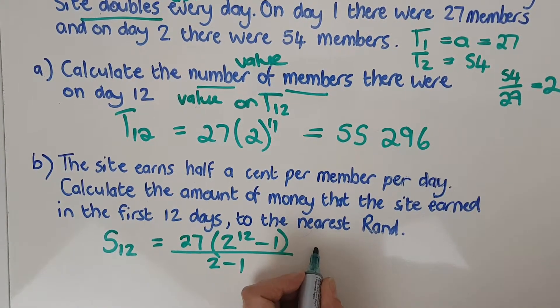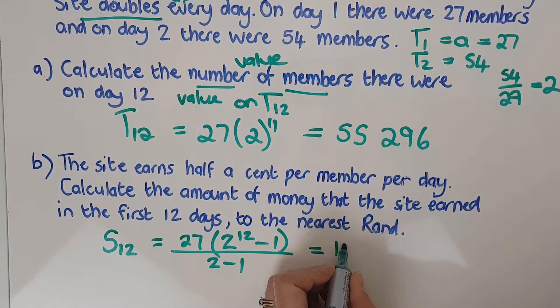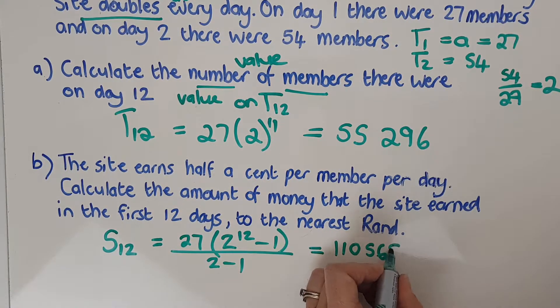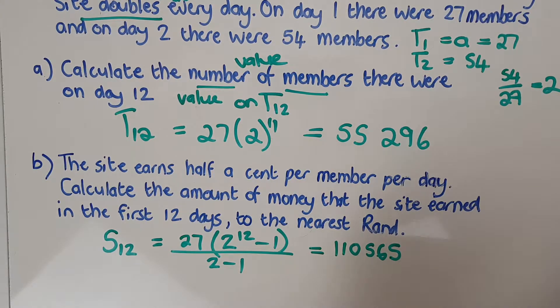And I'm going to end up with 110,565. What have I just worked out? That's actually the sum of the number of half cents that I've gathered. So if you added up all the half cents per day, you'd get that. So that's fine.